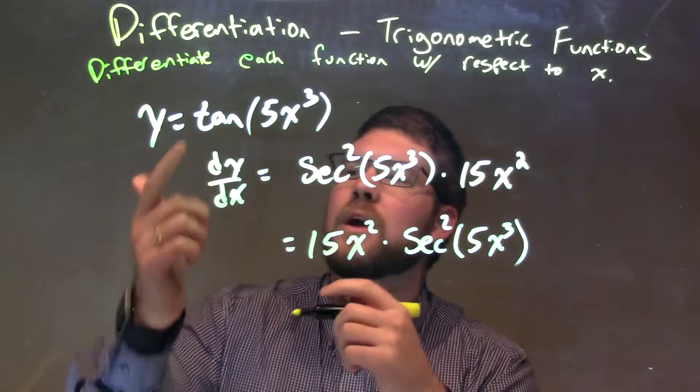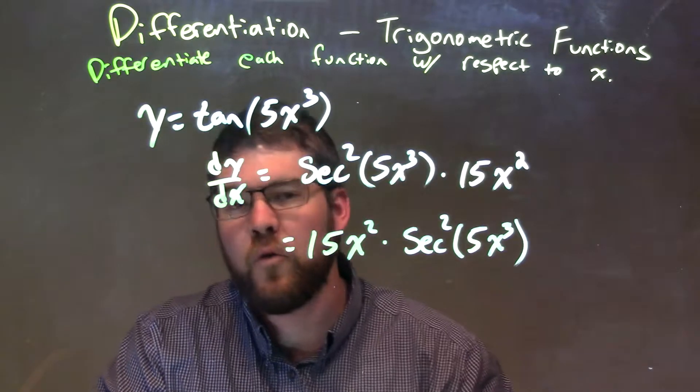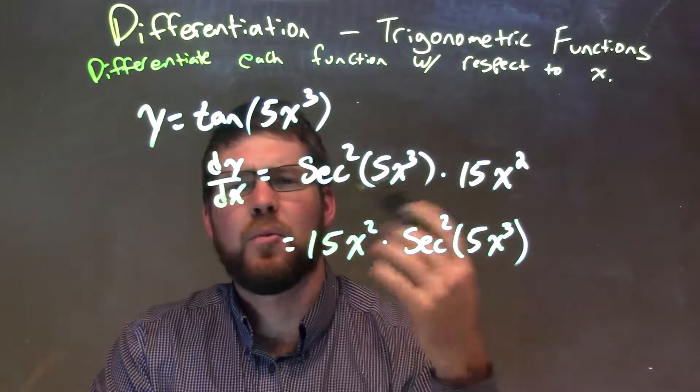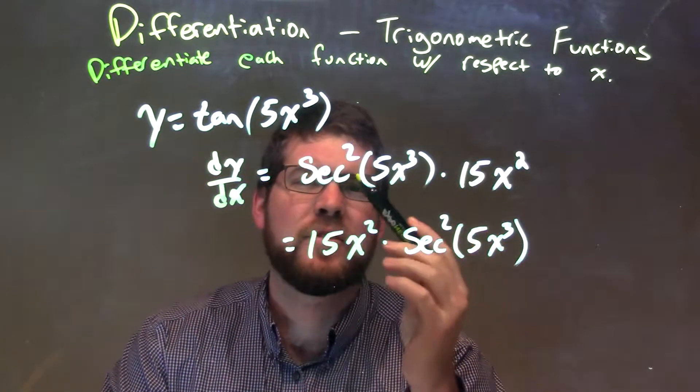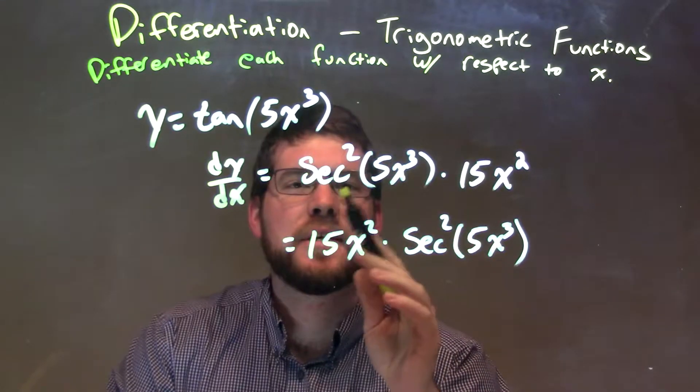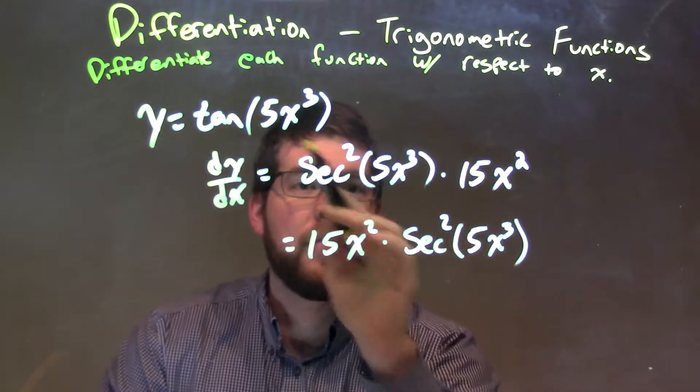Let's recap. We're given y equals the tangent of 5x to the third power. Taking the derivative of that, we first think, what's the derivative of tangent? That is secant squared. So secant squared, and we keep the inside the same.